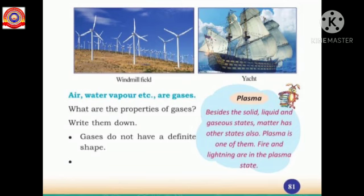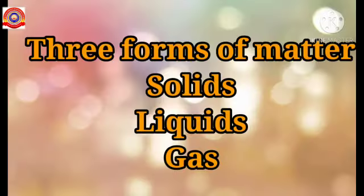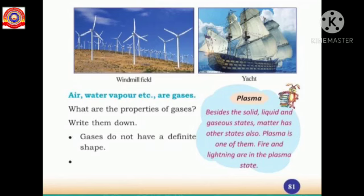In this chapter, we studied about the three forms of matter: solids, liquids, and gas. Besides these three states, matter has some other states. One of them is plasma. Plasma is a type of matter made up of groups of positively and negatively charged particles. Fire and lightning are examples of the plasma state of matter.